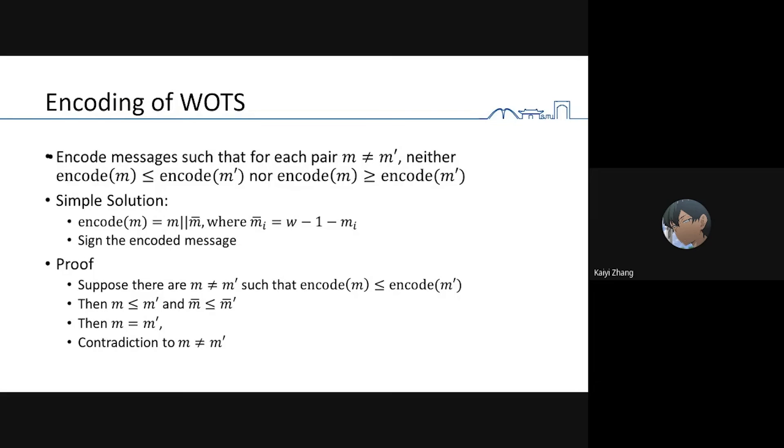If so, we can prove that if there are two distinct messages m and m prime such that their encoded messages are comparable, then we can conclude that m is m prime. This is a contradiction. So we complete the proof.